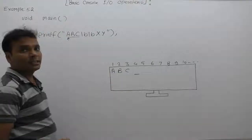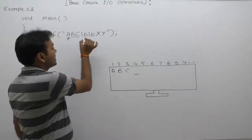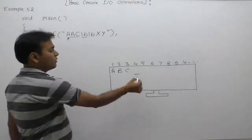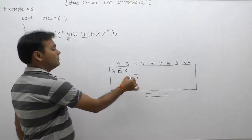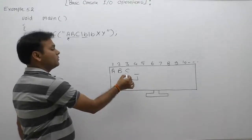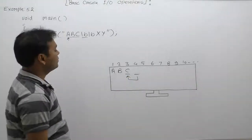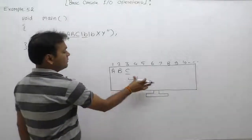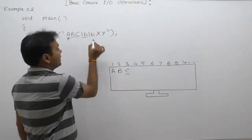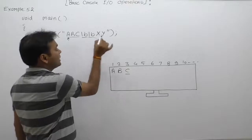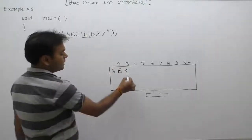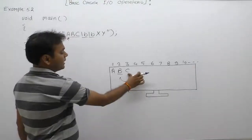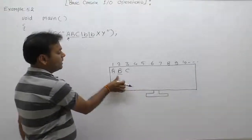After a, b, c, the next character is '\b', which is a non-printable backspace character. Because of '\b', the cursor moves back to the previous position — now inside 'c'. The next character is also '\b', so the cursor moves back again to the previous position, now inside character 'b'.